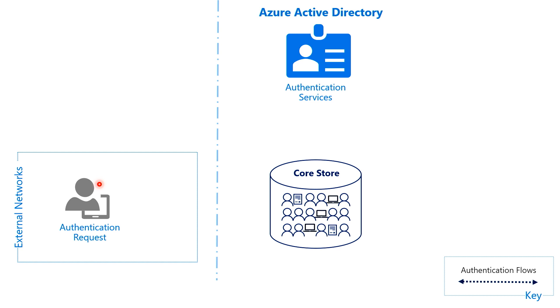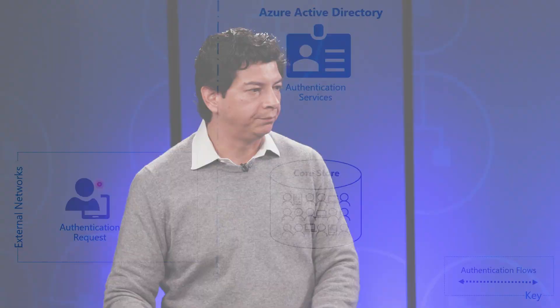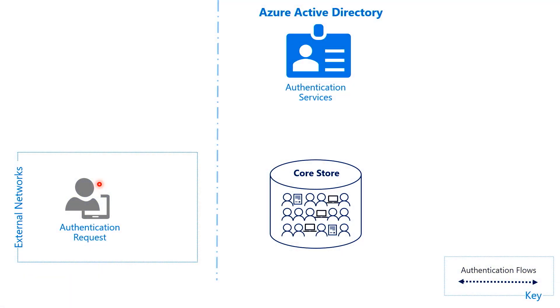Azure AD needs to know first how to authenticate Kim. So it renders a login page where she can type in her username, which is what we call an identity in the identity lingo, the user principal name or UPN. This is where this diagram starts. Azure AD has a lot of services under the covers that supply services for different scenarios. And today, we have this blue box here, which happens to be the authentication service. This service implements the different authentication protocols and provides credential gathering and credential validation experience for the end user.